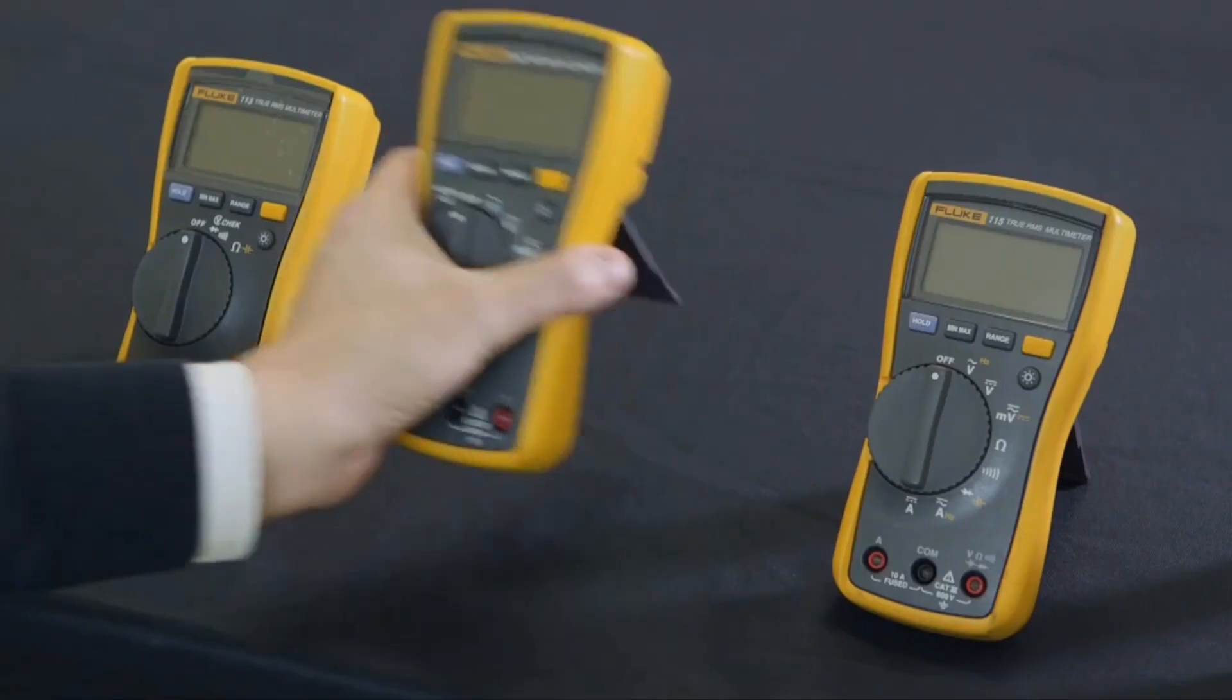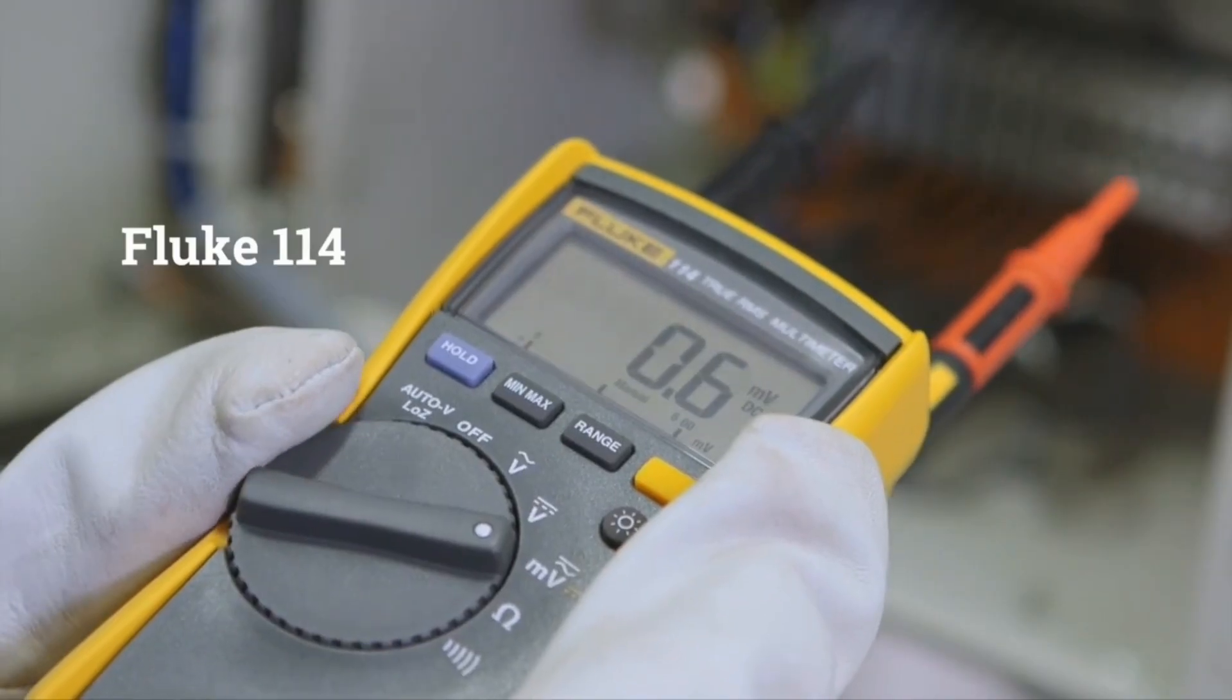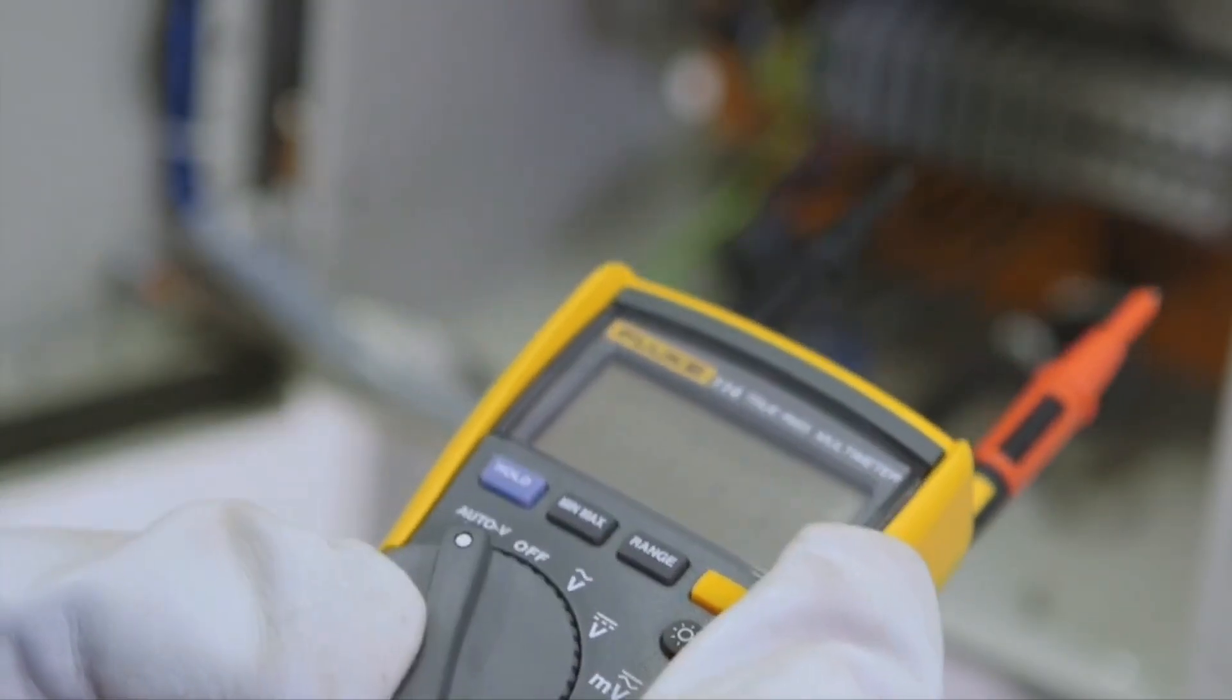The Fluke 114 has a low Z feature that helps prevent false readings caused by ghost voltage.